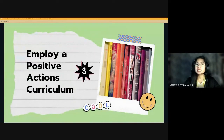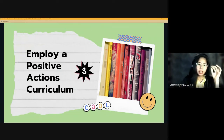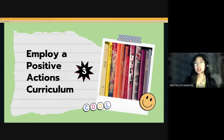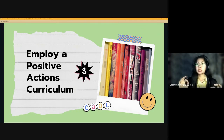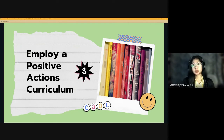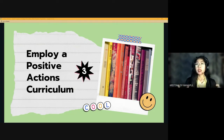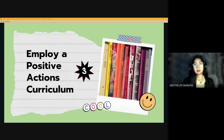The third step is to employ a positive actions curriculum. Our students come from diverse cultural and socioeconomic backgrounds, which influences how they perceive things and what behaviors they think are appropriate. We must have a teaching system for students to know what positive behaviors are, so we can successfully establish a positive learning environment. A learning environment is not just established by the teacher — it's a collective effort that everyone partakes in. The positive actions curriculum is one of the most effective ways to teach students positive behaviors.